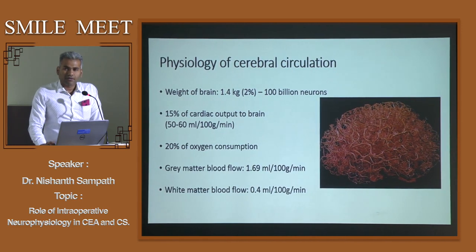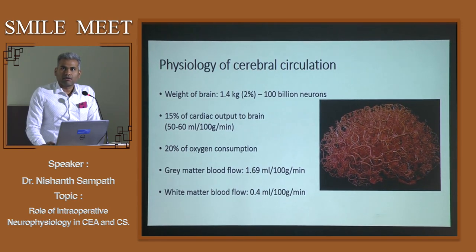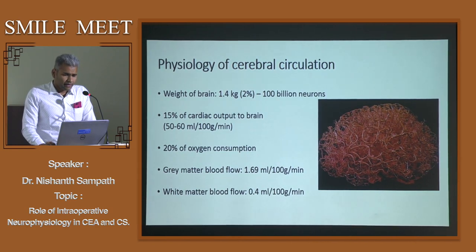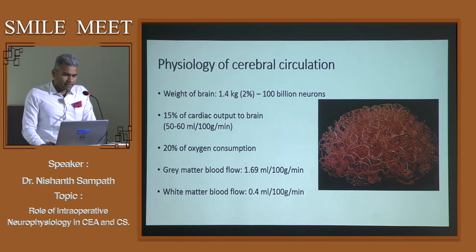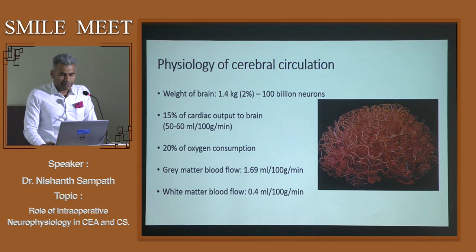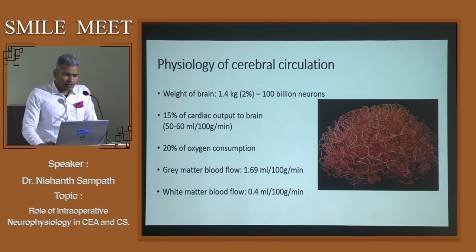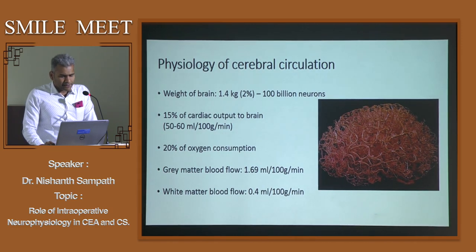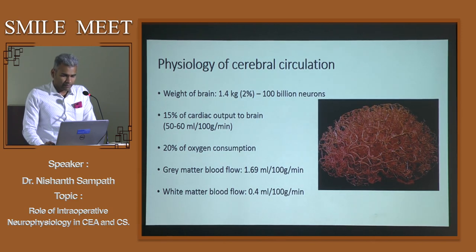The brain is about a 1.4 kilogram organ with about 100 billion neurons. It constitutes only 2% of body weight but accounts for about 15% of cardiac output and about 20% of oxygen consumption. The gray matter receives about four times more blood supply compared to the white matter.